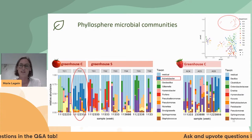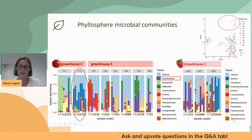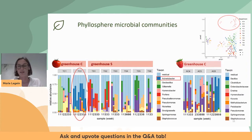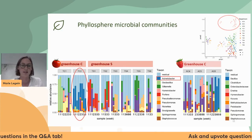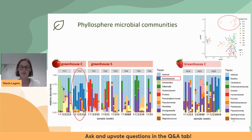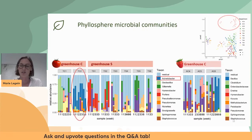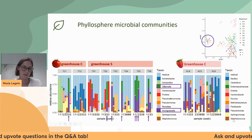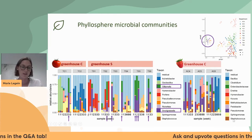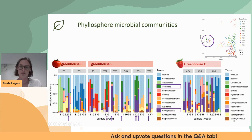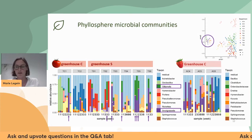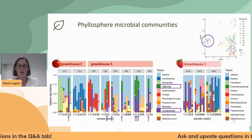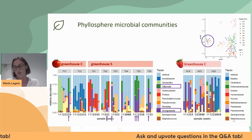In the bar plot of taxa present across all samples, the TC2 department samples are dominated by Acinetobacter, which we don't find in the other samples — that's what differentiates them. The other distinct cluster, indicated by purple arrows, contains samples with high abundances of Gilliamella and Snodgrassella, which is remarkable because these two genera are typically found on bumblebees, not on plants.